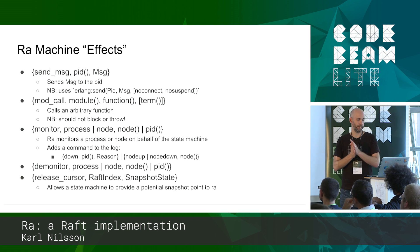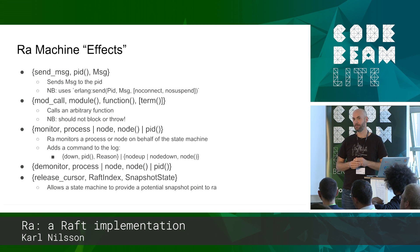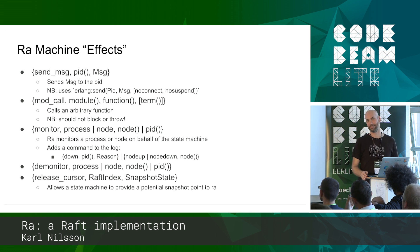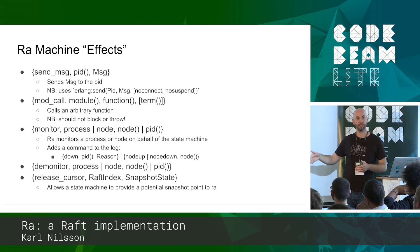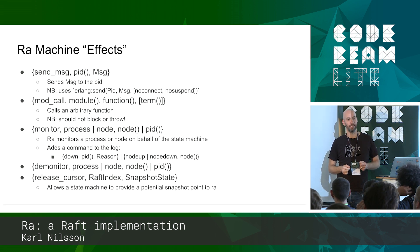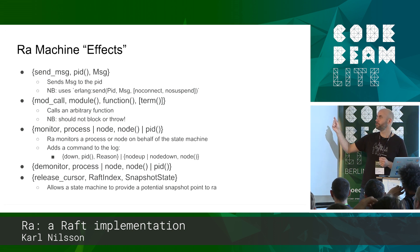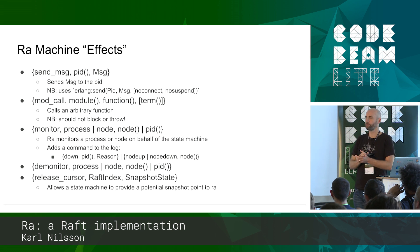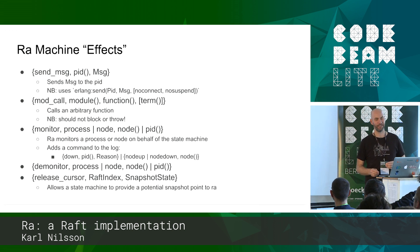There's a variety of effects that the Ra machine currently supports. The send message effect takes a PID and a message and sends the message to the PID, but only on the leader node. What's important to note is that it uses Erlang send with no_connect and no_suspend - the least reliable way of sending a message available. It does this because it doesn't want to block. Without no_connect, if a node is disconnected, Erlang will try to reconnect, going through the whole TCP thing, and that is enough to block a node for some time and affect throughput. So you have to implement your own reliability protocol on top of it.